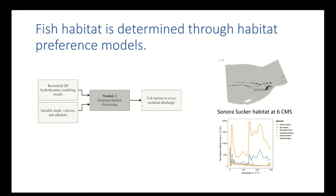This is an example of Sonoran sucker habitat at six CFS — it reaches about a meter — to give you an idea of how much habitat is actually available. Once we quantify the habitat available at each discharge for every species, we are able to generate habitat area-discharge curves.